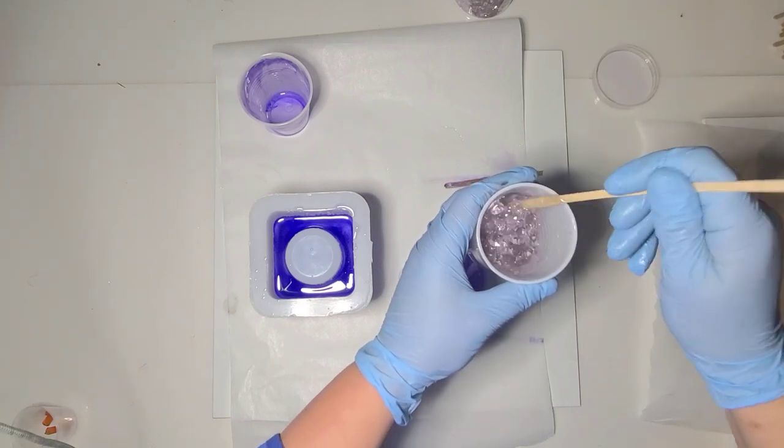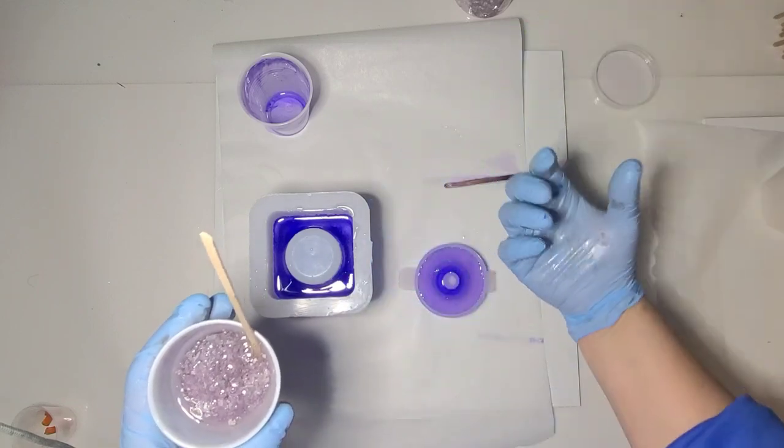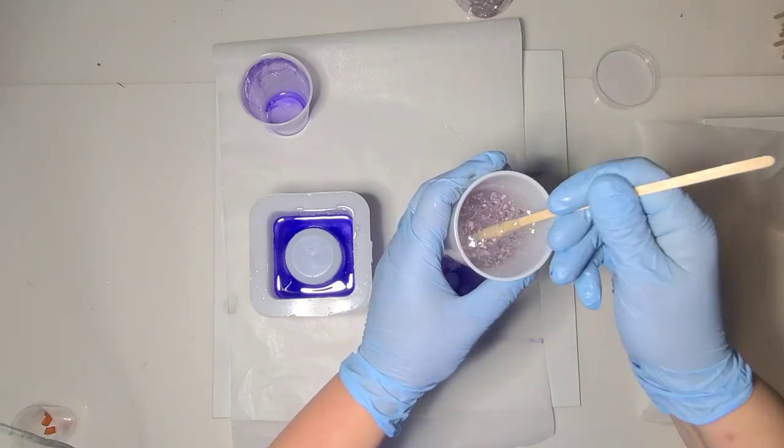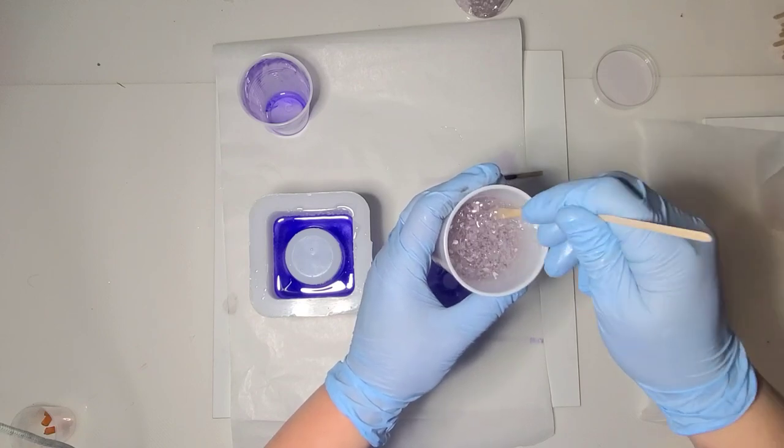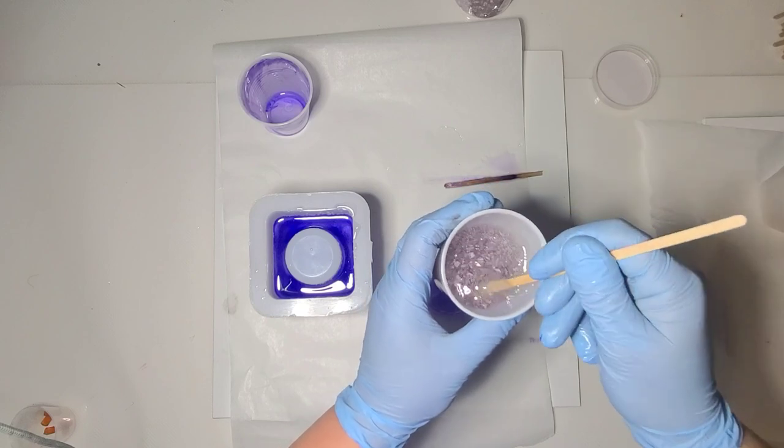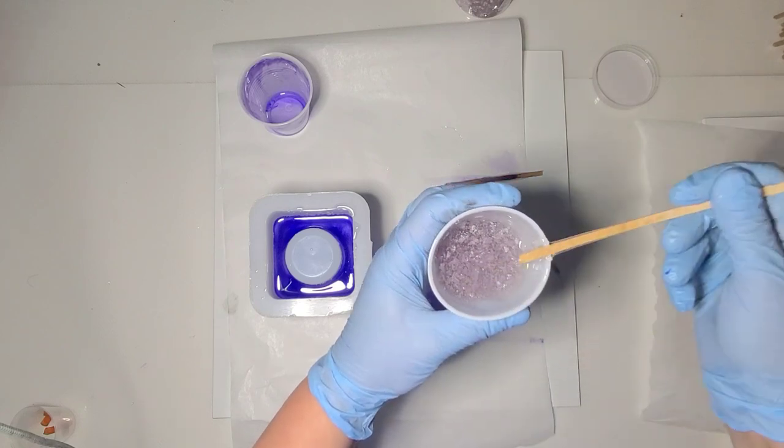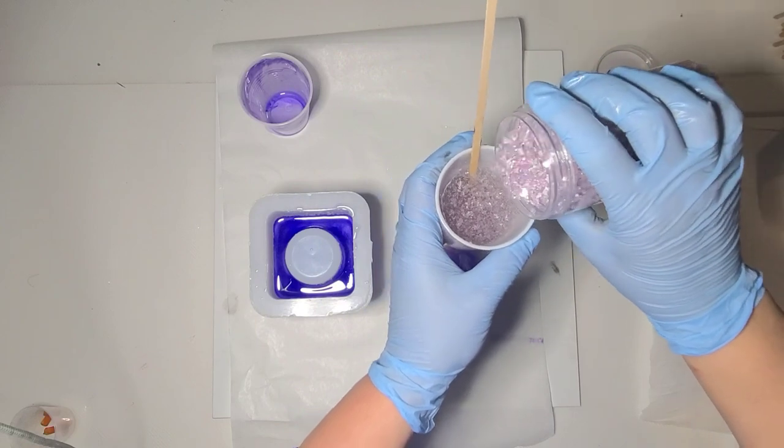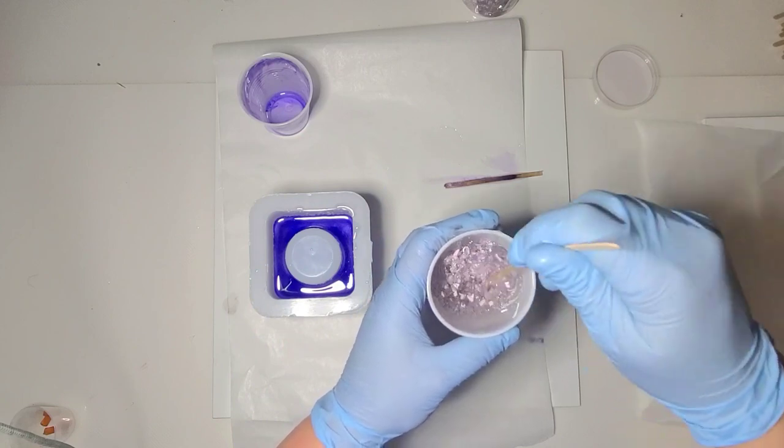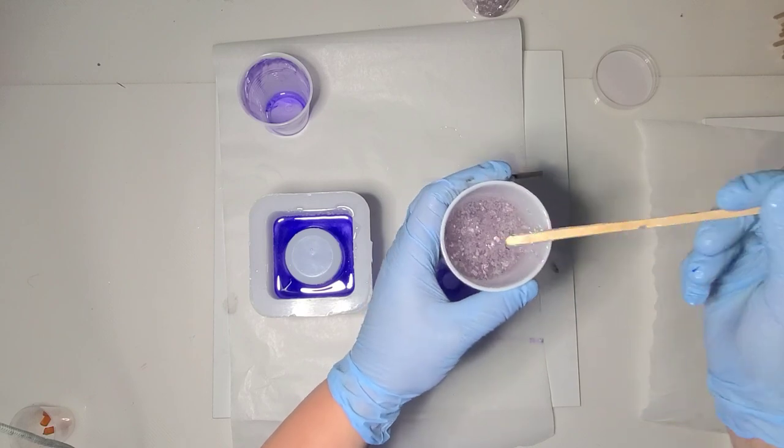And I'm going to mix them in. Now because this isn't cured, these are going to sink to what will be the top of the bottle. Like I said, it's not the ultimate, but I don't really want to waste the resin I have here ready to go. And I did just introduce quite a few bubbles doing that, because like glitter, the glass will hold some air as you mix it. Hopefully they'll work their way back to the surface after I pour.